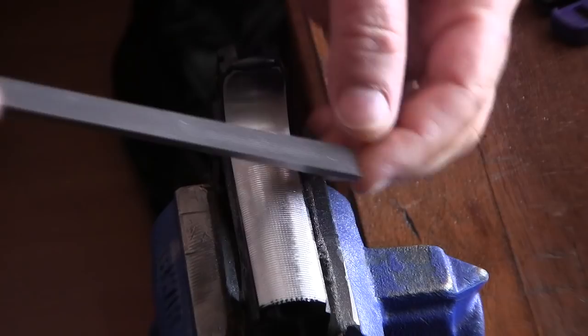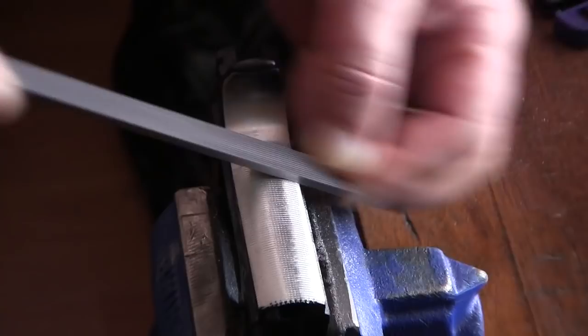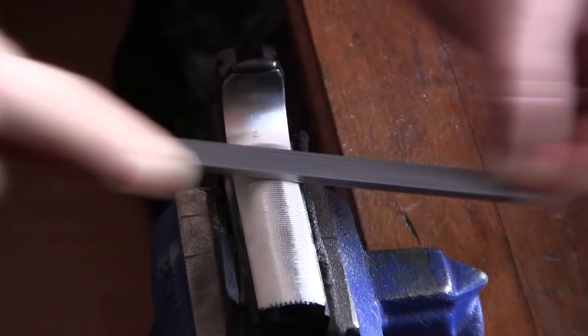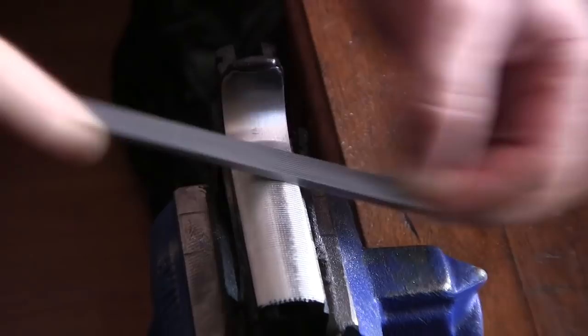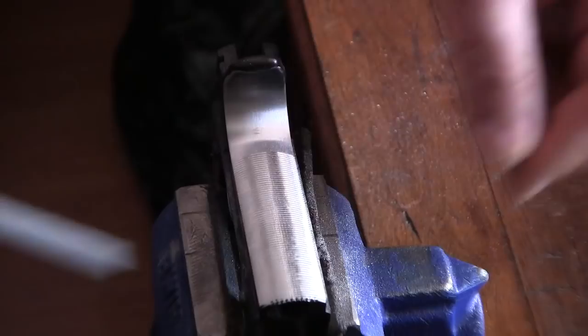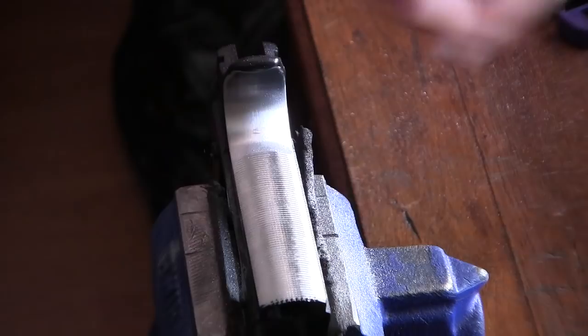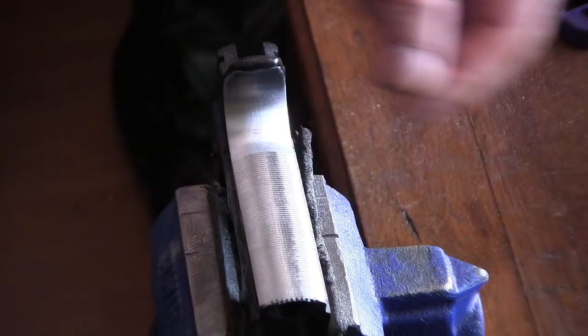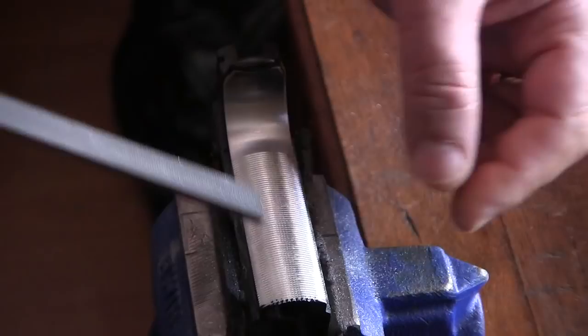Basically I decided to stop exactly where the original serrations used to be and not go any further. The process is the same—moving the file over a few lines at a time. At this point I'm just trying to clean up and make sure that all the lines appear similar, if not identical in thickness, which tells me the depth is even between them.